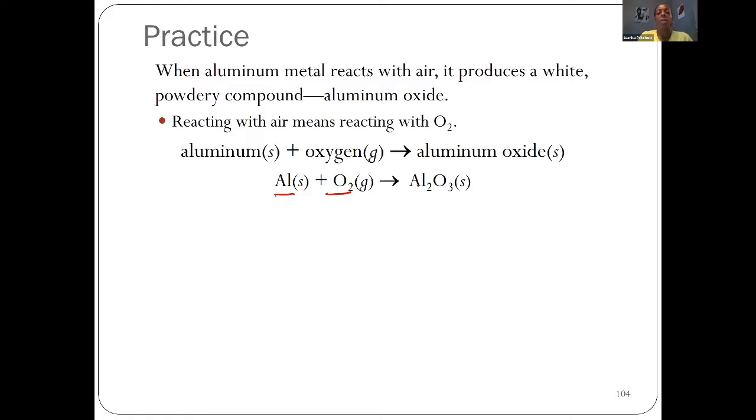Aluminum has a positive three charge, oxide means oxygen with a negative two. We cross down and that's where Al2O3 comes from.